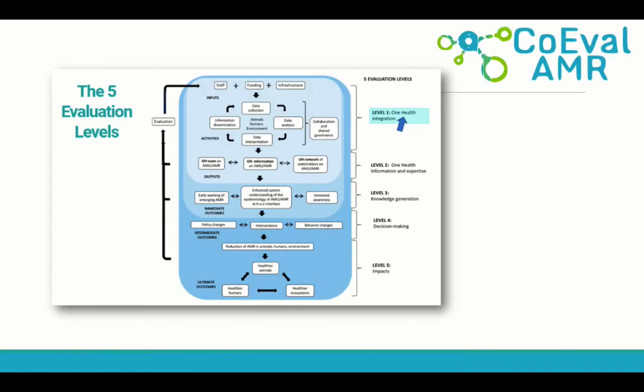For example, Level 1 evaluation aims at evaluating One Health integration across the different components of the surveillance system. This includes the evaluation of the collaboration between stakeholders and organizations, shared governance, as well as integration of different One Health components from human, animal, plant and environmental health in surveillance activities.